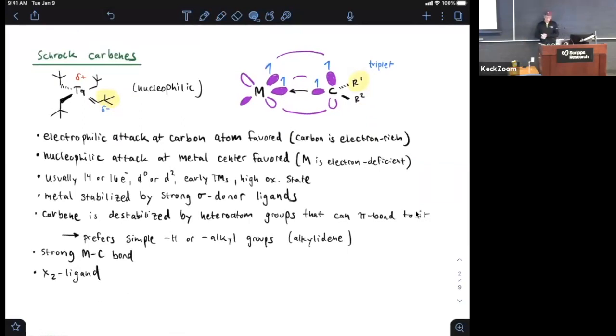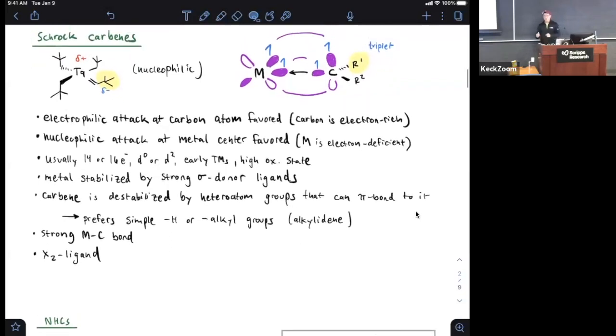In the case of Schrock carbenes, almost everything is flip-flopped. Now we have an electrophilic metal and a nucleophilic carbon. In terms of an MO depiction, we have the carbene being triplet state as opposed to singlet state in the Fischer carbene case. The non-bonding sp2 hybridized orbital of the carbene and the orthogonal p orbital are each singly occupied, forming bonding interactions with singly occupied orals of appropriate symmetry on the metal.